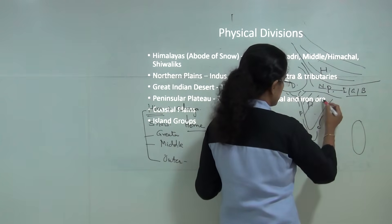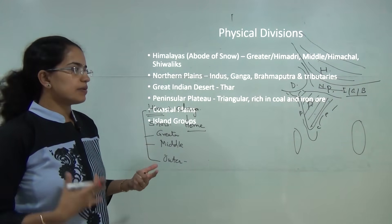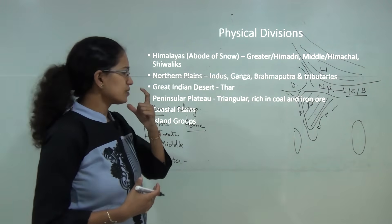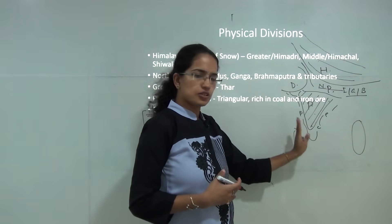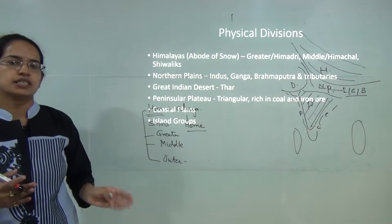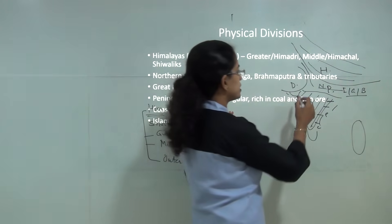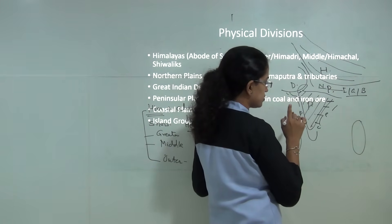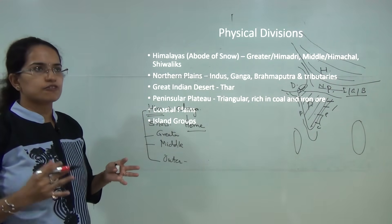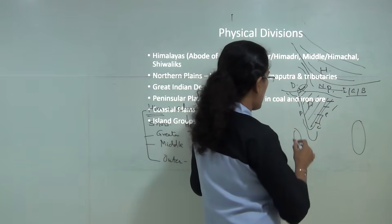The Peninsular region is triangular in shape and volcanic in nature, made up of volcanic extracts. It is rich in minerals, mainly coal and iron. It is surrounded by the Western Ghats, also known as Sahyadris, to the west and the Eastern Ghats to the east. The Western Ghats are a continuous range, whereas the Eastern Ghats are broken with numerous gaps. On the northwestern edge of the Peninsular region lie the Aravallis, which are old relic mountains that are gradually decreasing in height.